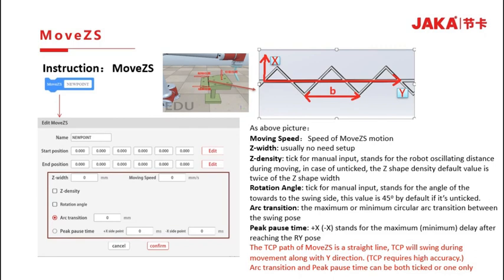For MOVEZS instruction, the moving speed is the speed of MOVEZS motion. Z width usually doesn't need setup. Only when we tick Z density, the default value of Z density is twice the Z width. When ticked, the rotation angle inputs the angle that the robot swings towards one side. This value is 45 degrees when unticked.